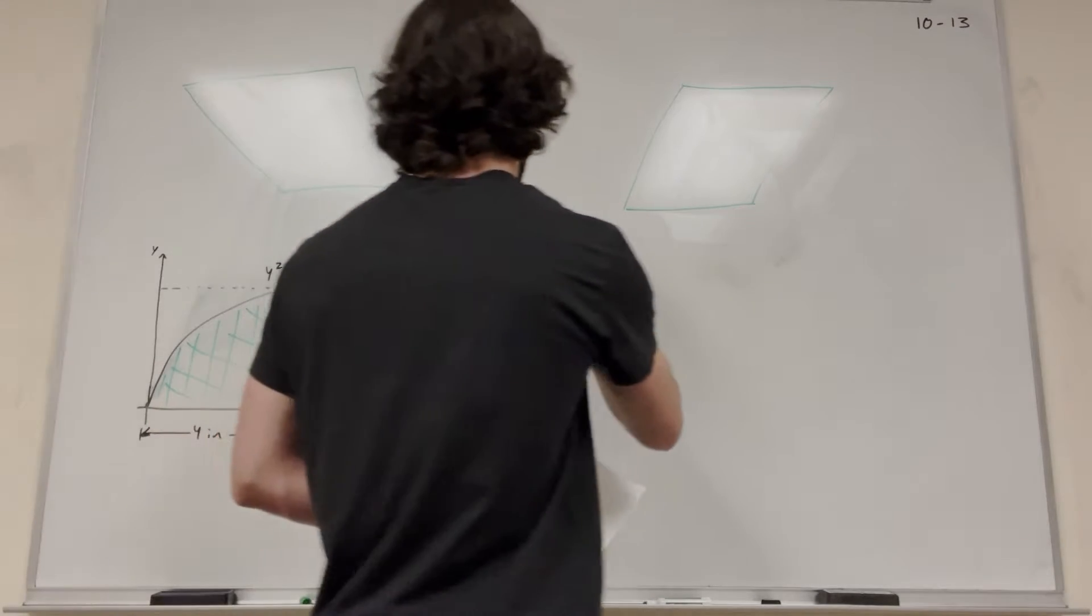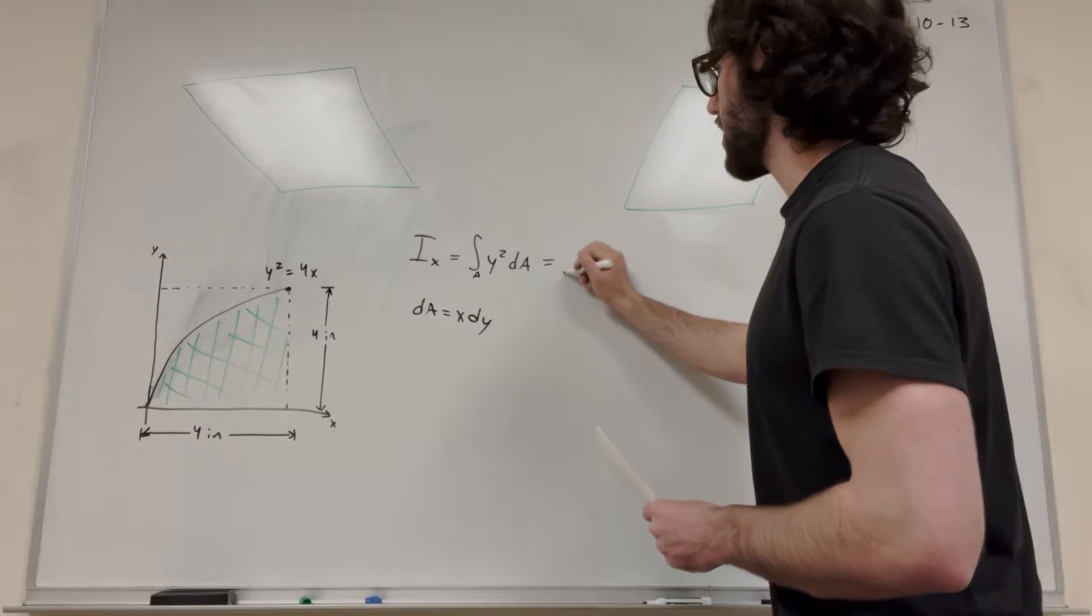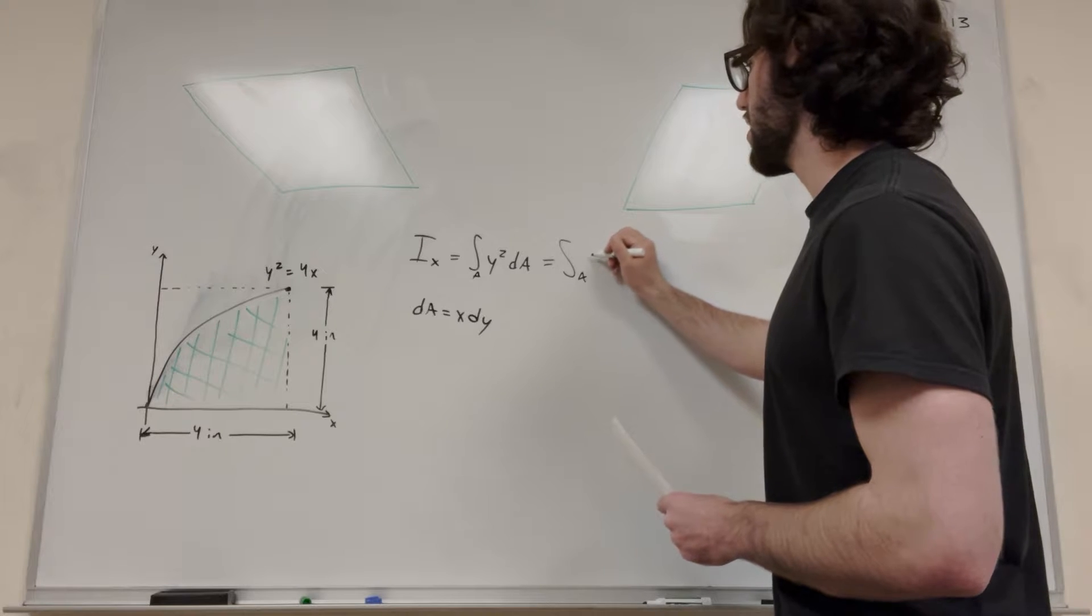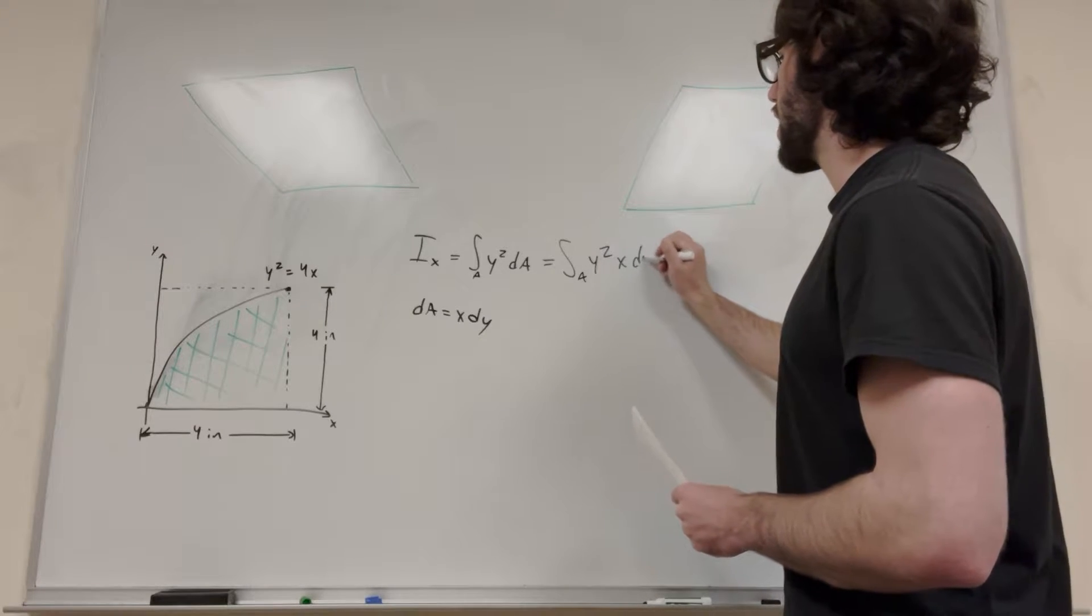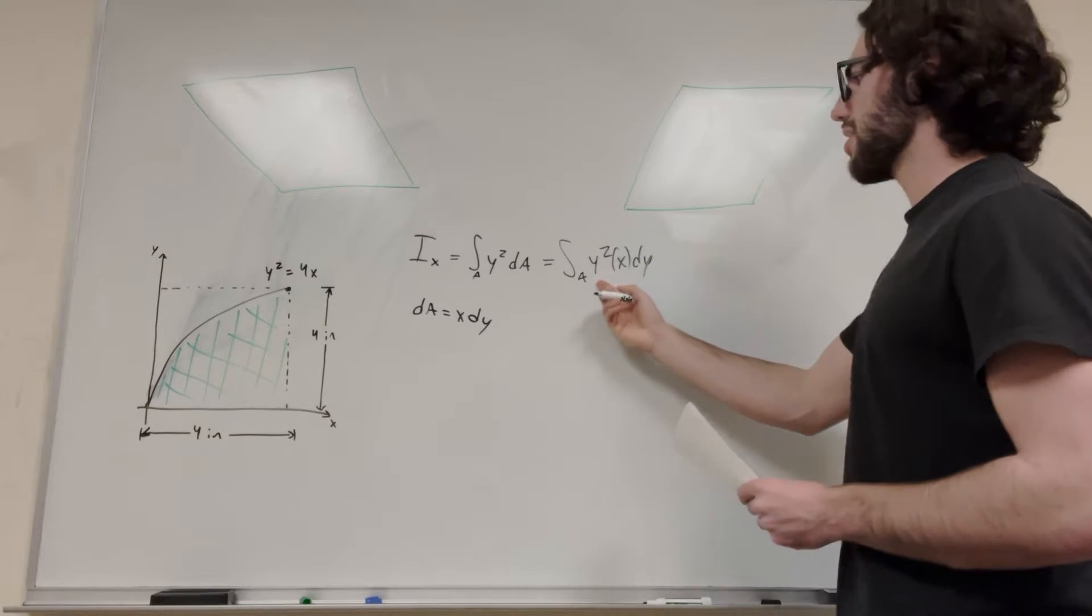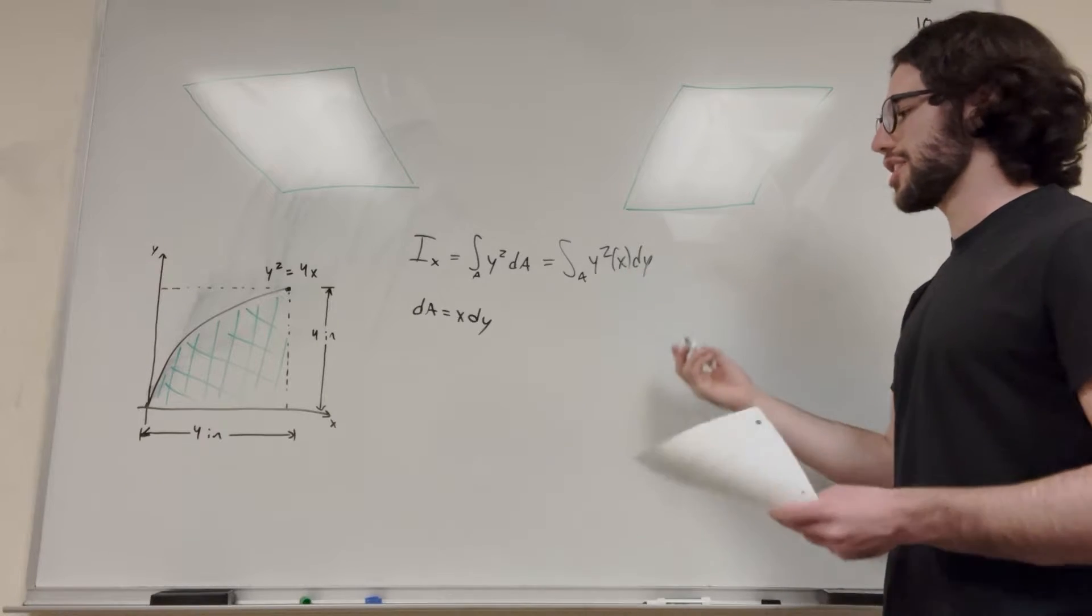So that's our dA, so we can put that into the integral here. We can say it's equal to the integral over the area of y squared xdy. But this doesn't really help us either, because x is not just x.